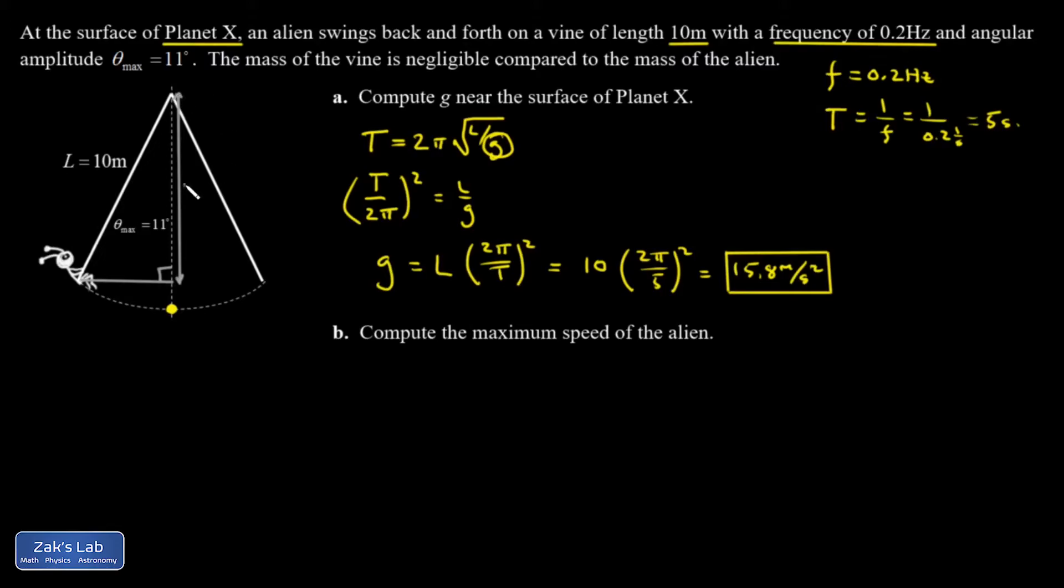And I see that this leg is going to be an L cosine θ. I'll plug in the numbers later. But the string still has a length of L. And that means this little missing height right here is L minus L cosine θ. I'm going to put my origin of coordinates at the low point of the problem. So that's Y equals 0. And then at the initial height where the alien is elevated by 11 degrees, that's going to be a height of L minus L cosine θ.